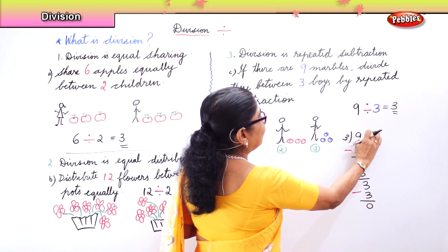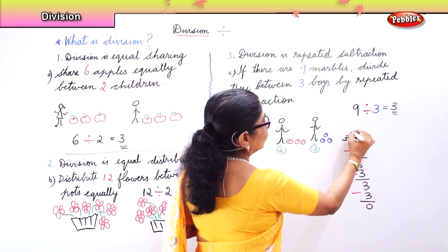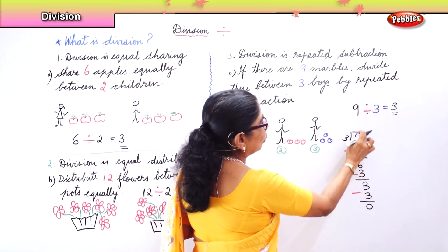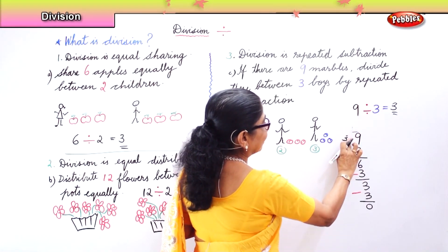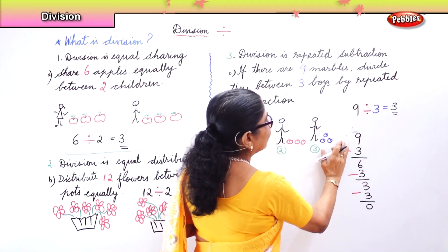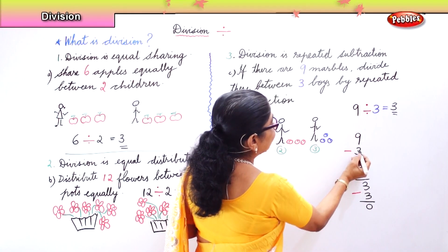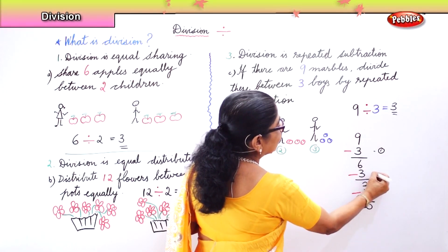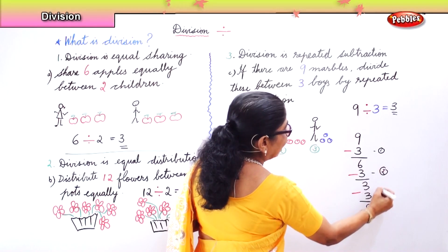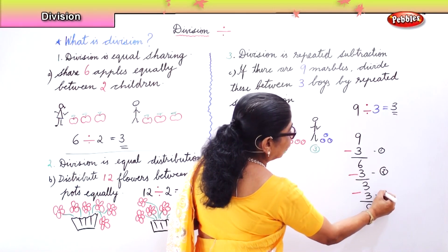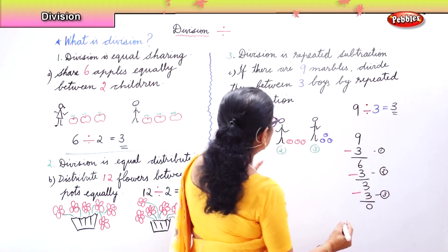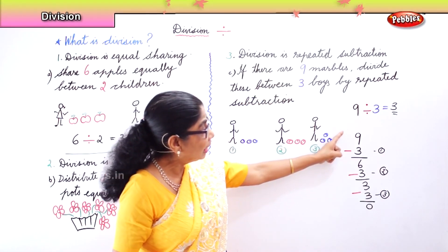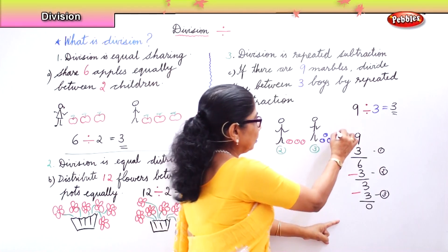What is this? Repeated subtraction. We are dividing by repeated subtraction — we go on subtracting, subtracting, subtracting. So the nine marbles: the first three go to the first boy, the next three go to the second boy, and the three goes to the third boy. So each boy gets three marbles. Division is repeated subtraction.